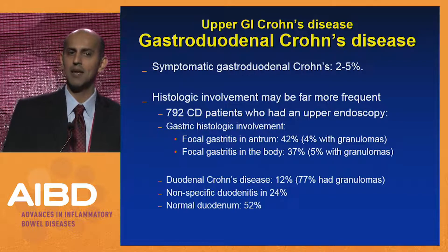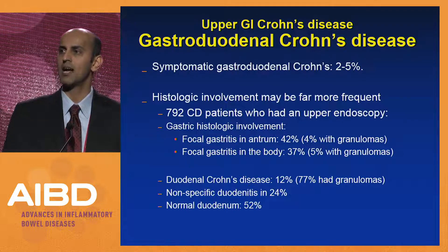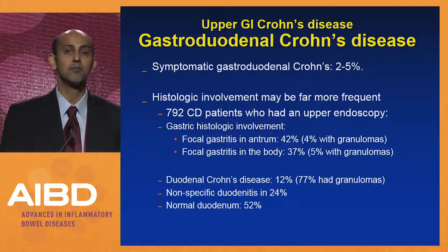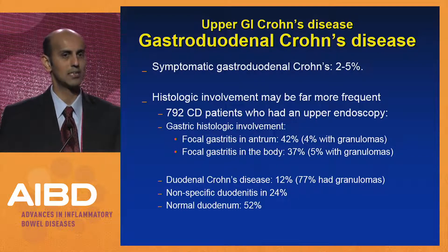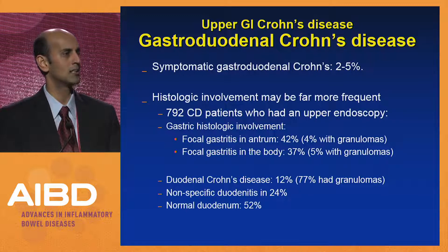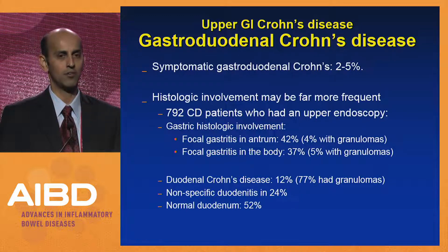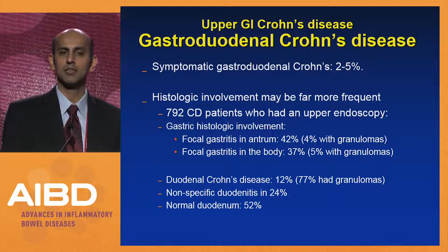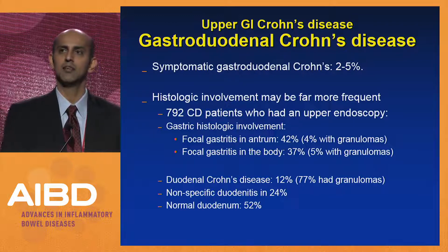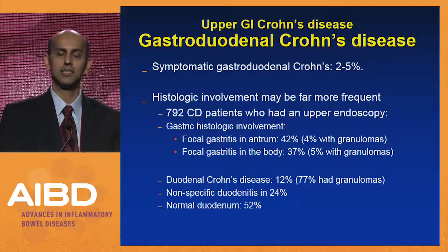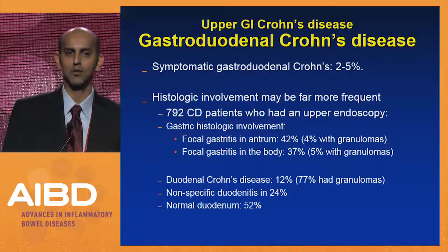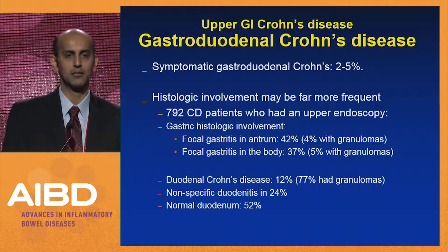In the same study, when they biopsied the duodenum, 12% showed some histologic abnormality, the vast majority of whom had granulomas in this series, though this has been debated in the literature. Nonspecific duodenitis was very common at about 24%, and only about half the patients with Crohn's disease who did not have macroscopic lesions had normal duodenal histology.